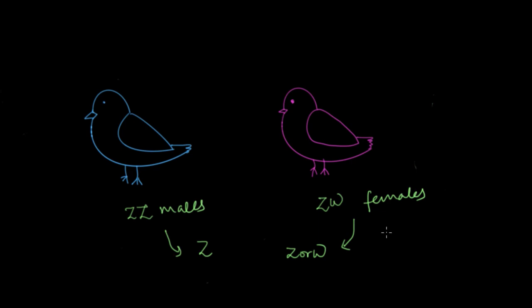This time, moms are the one who gets to decide the baby's sex, instead of the fact that dads used to do that for us. If the mom gives out a Z, then we're gonna have a baby boy bird. And if she gives out a W, then we're gonna have a baby girl bird.